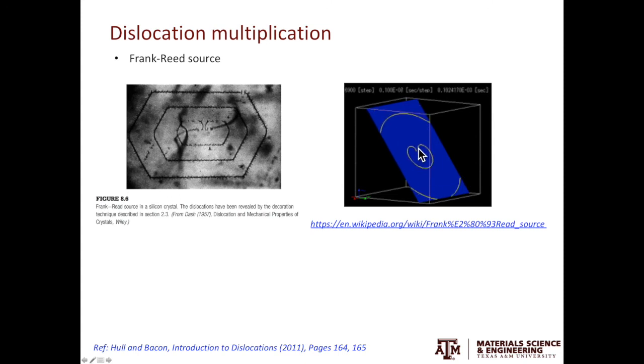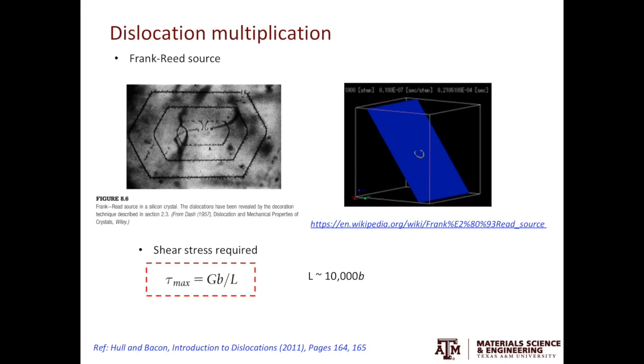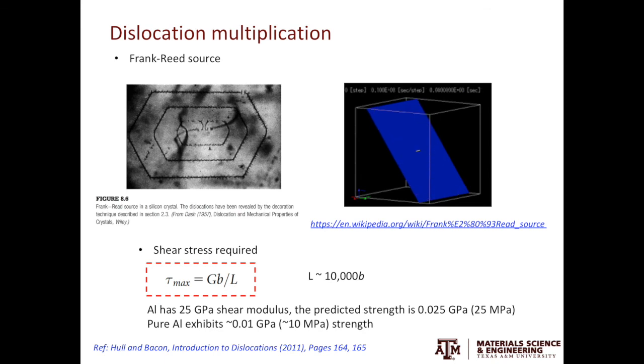A natural question to ask is does the dislocation multiplication model can give us some reasonable value for the strength of the material. The shear stress that is required to operate the Frank-Reed source is GB over L. L is the Frank-Reed source size, which is usually about 10,000 times the size of the Burgers vector. Let's again use aluminum as the example. The shear modulus of aluminum is about 25 GPa. Then the applied stress from this model is 0.025 GPa, which is very close to 0.01 GPa. So the dislocation multiplication model could successfully explain the strength observed in metallic systems.